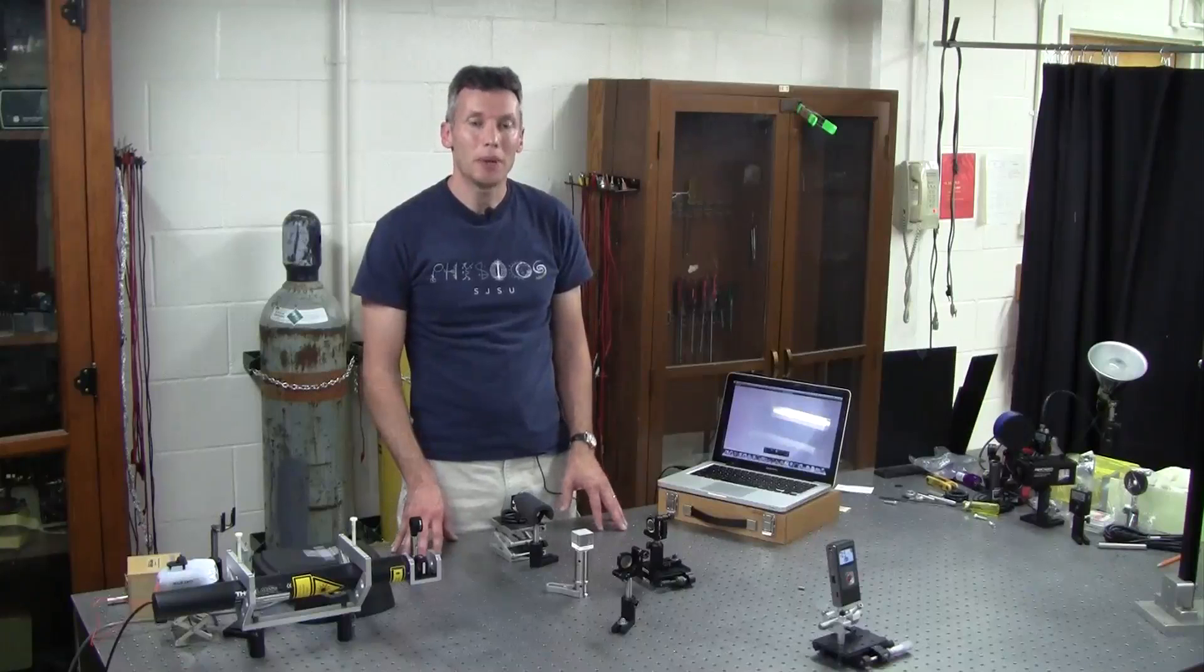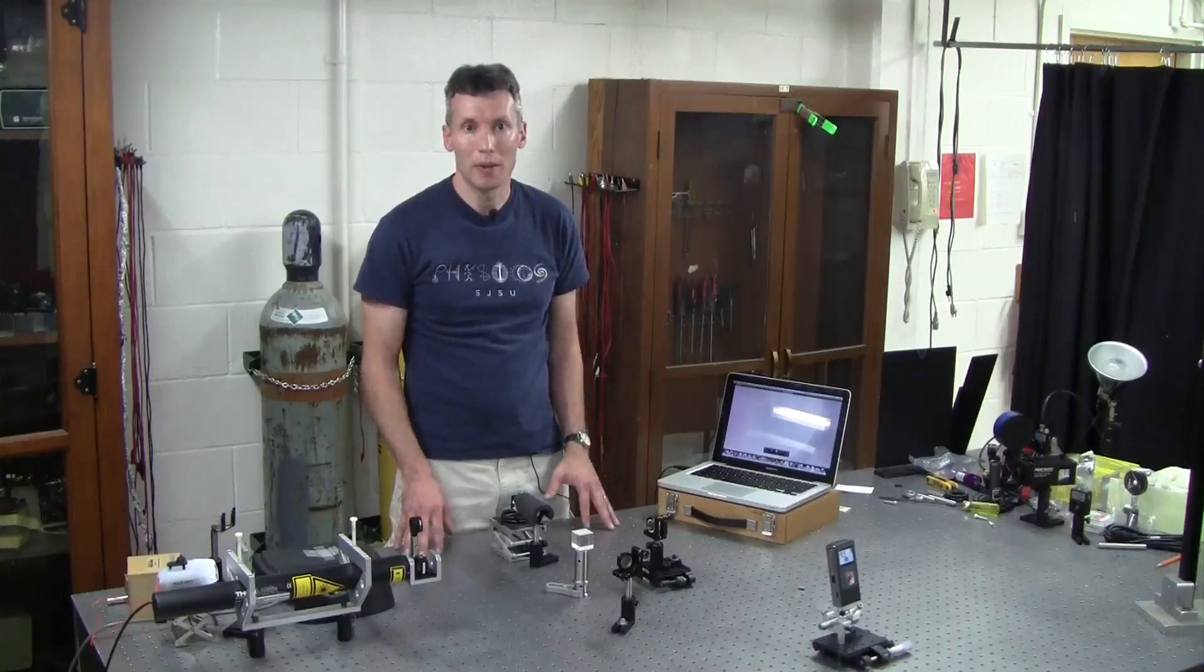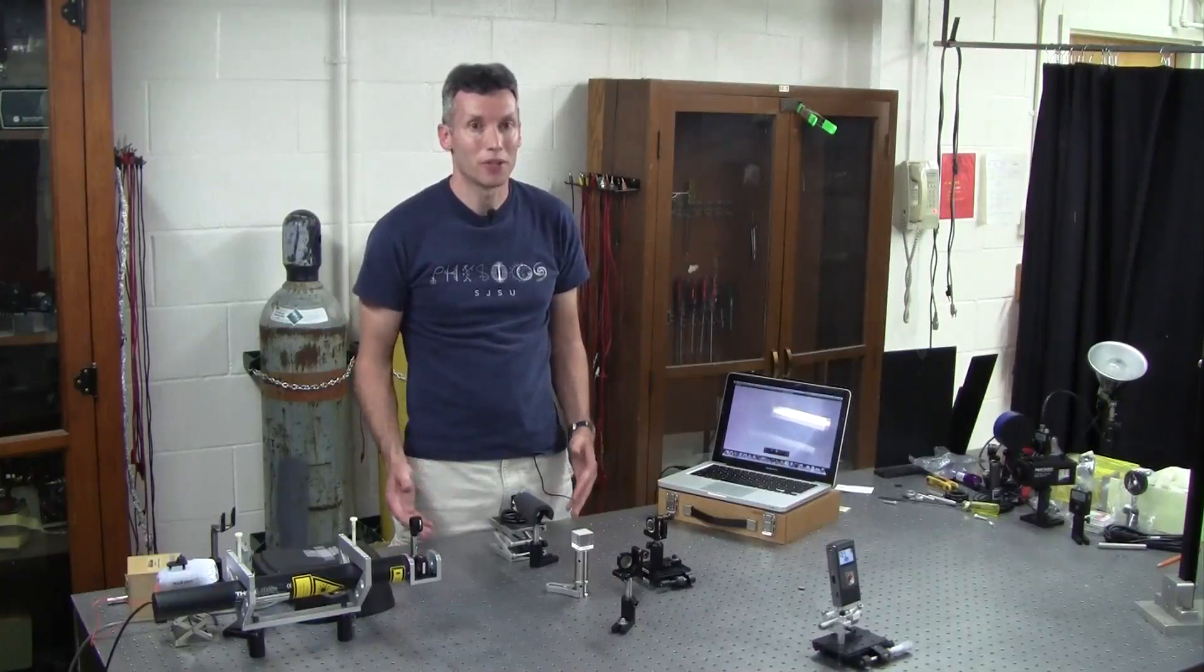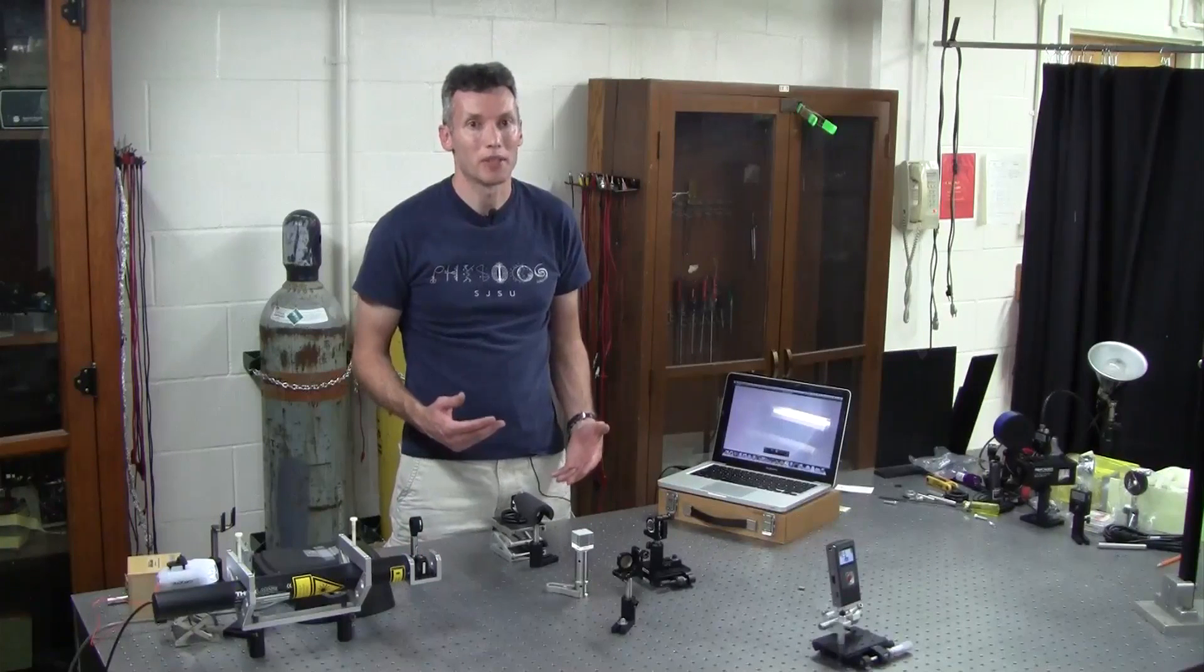The reason being is that we typically make some coarse adjustments to the alignment of the mirrors in an interferometer, acquire interference fringes, and then use those fringes to make the fine adjustments to the mirrors.